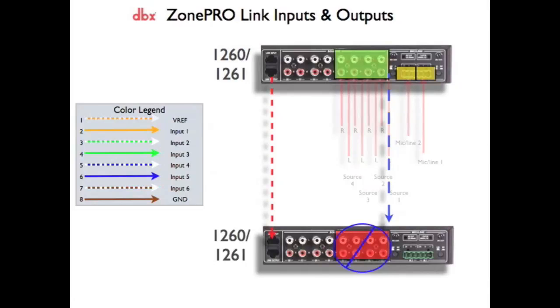These jumpers can be configured independently between the ML1 and ML2 inputs. Setting the Link Output jumpers to the disabled position on the first ZonePro device would break the audio connection between the ML1 and ML2 inputs and the Link Output.